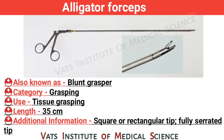Alligator forceps, also known as blunt grasper. Category: grasping. Use: tissue grasping. Length: 35 cm. Additional information: square or rectangular tip, fully serrated tip.